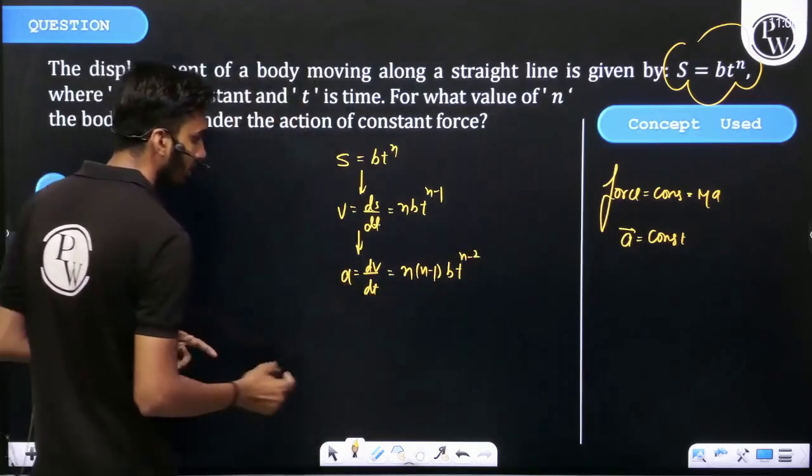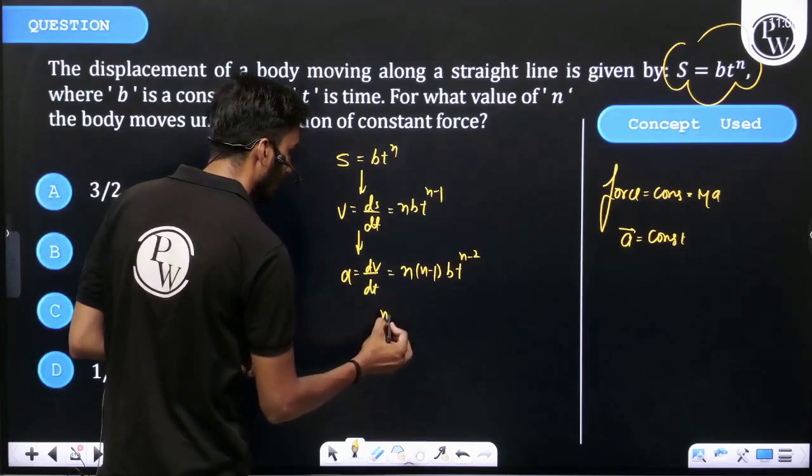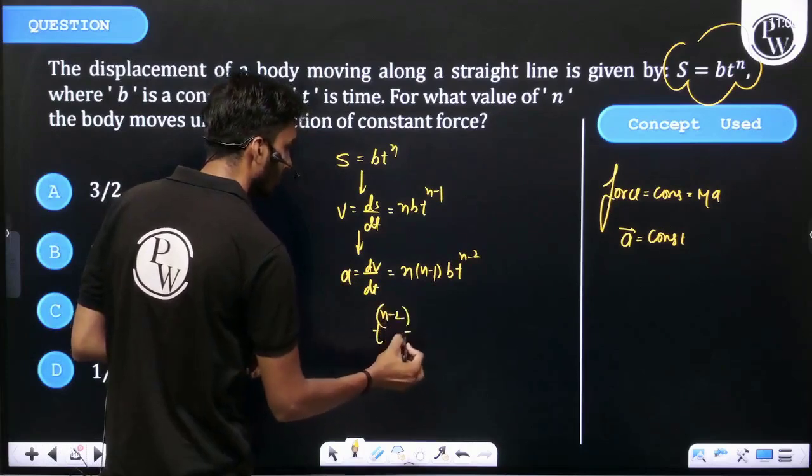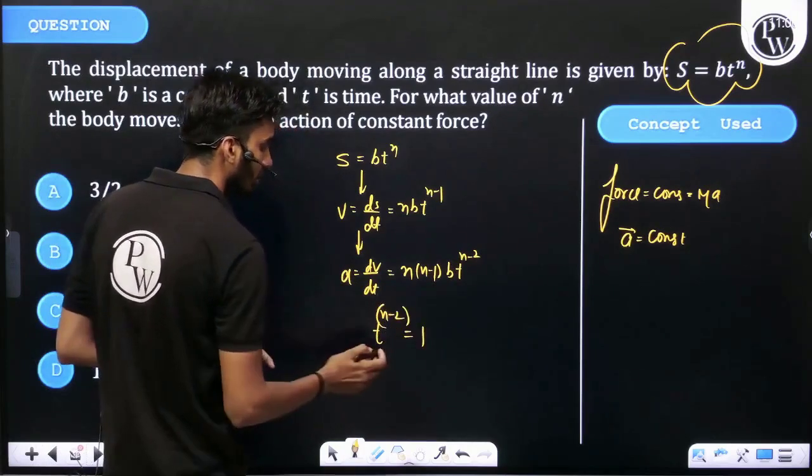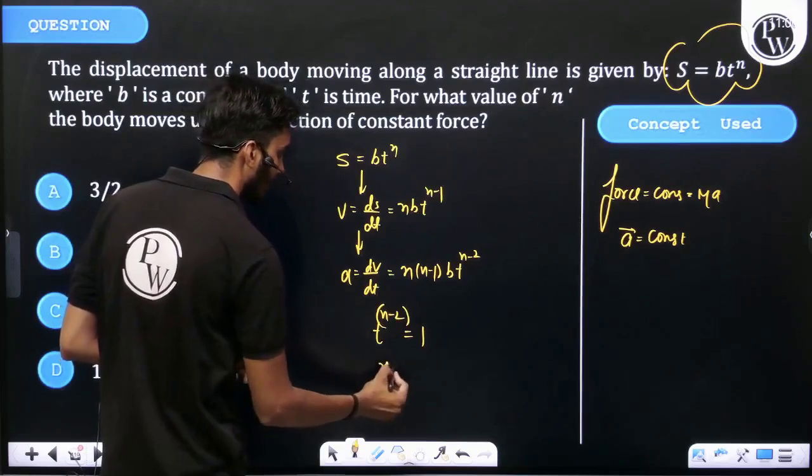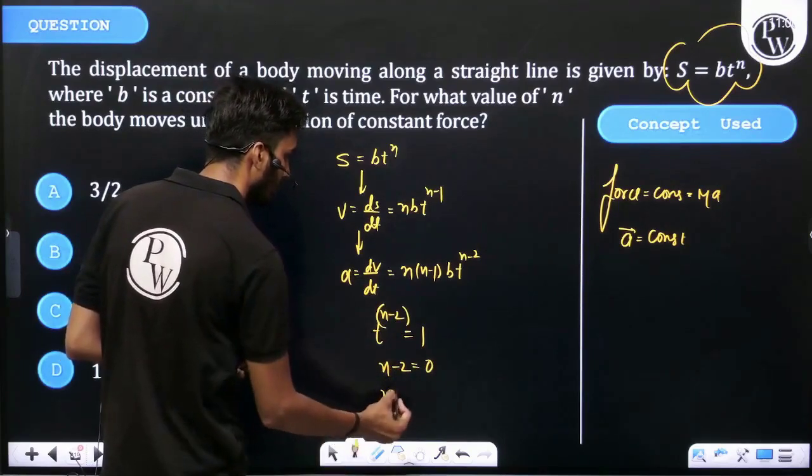Then t^(n-2) is equal to 1. Okay, then n-2 is equal to 0, and n equal to 2.